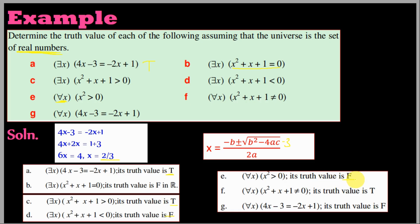For all x, x squared plus x plus 1 is different from zero. Since the discriminant of x squared plus x plus 1 is less than zero, the expression has no real roots and is always nonzero for real x. Therefore, the truth value is TRUE.